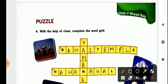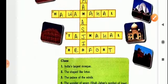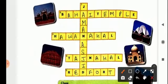Next we have, with the help of clues, you have to fill up the puzzle. The first one is India's largest mosque, it is Jama Masjid. J is given, you have to write A, M, A, Jama and Masjid, M is given, you have to write A, S, J, I and D is already given.